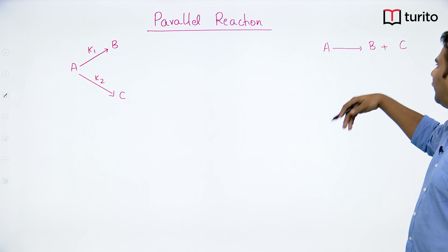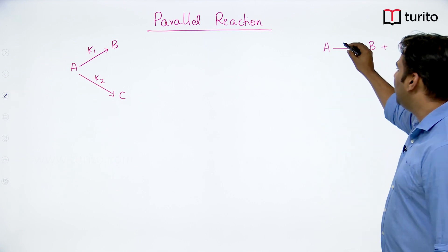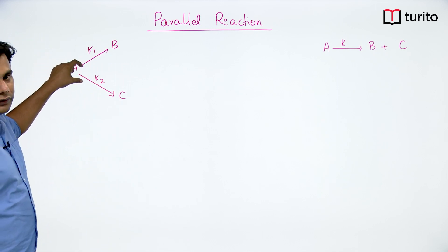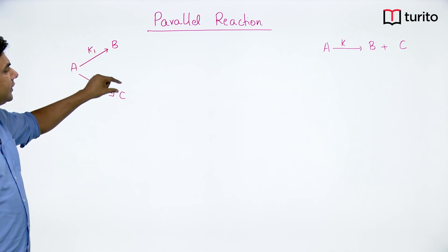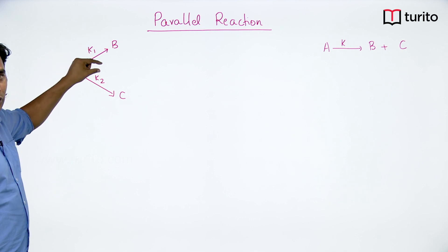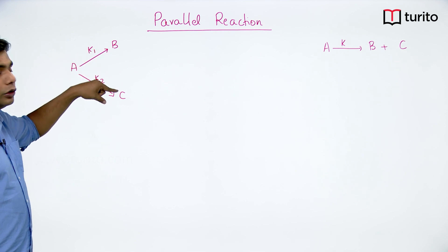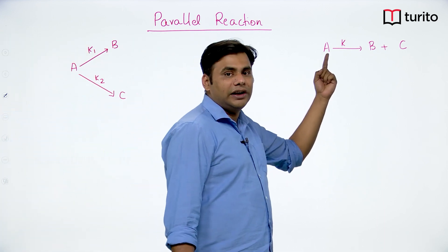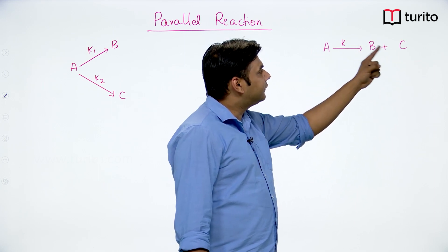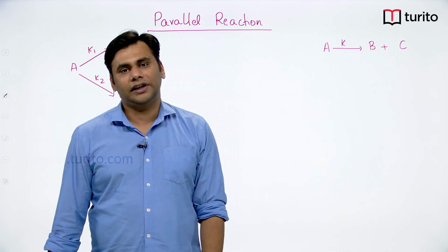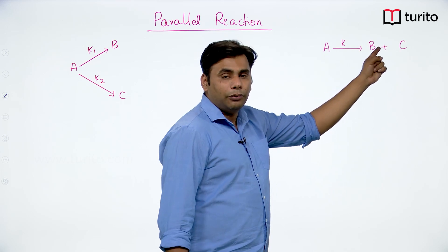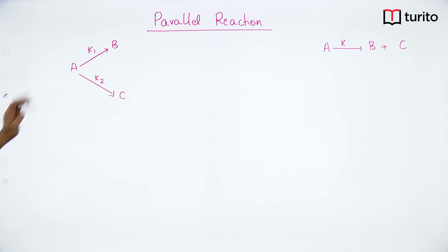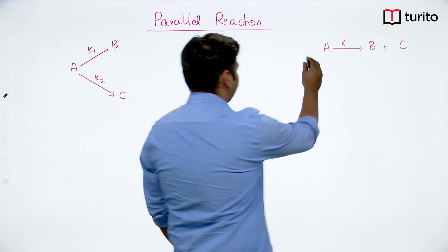This is different from a reaction where one mole of A gives one mole of B and one mole of C with the same rate constant. In that case, B and C are always formed in equal moles. But in parallel reactions, B and C are formed at different rates because their rate constants are different. Depending on the value of the rate constants, the moles of B and C formed will differ — more A converts to the product with the higher rate constant.